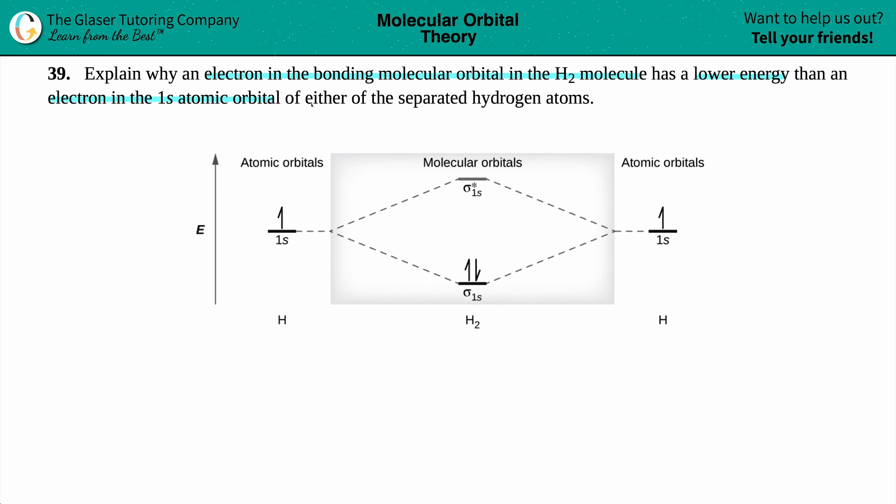Okay, now in order to fully understand this, I brought up a picture of the atomic orbitals versus the molecular orbitals of hydrogen. So they're basically asking for why is this orbital where the two electrons lie in H2, why is this lower in energy?